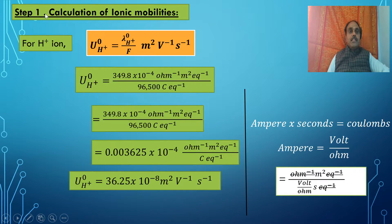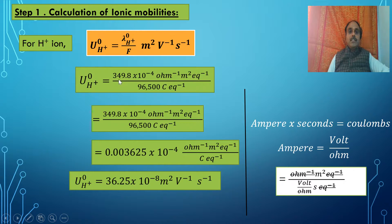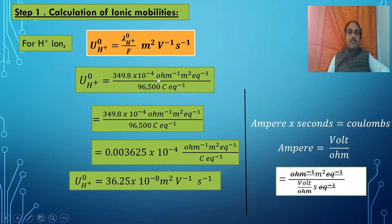Step 1 is the calculation of ionic mobilities, first for the H⁺ ion. Ionic mobility of H⁺ is calculated using λ°(H⁺) divided by F: 349.8 × 10⁻⁴ divided by 96500. The unit in the numerator is per ohm·meter² per equivalent, and in the denominator it is coulombs per equivalent.